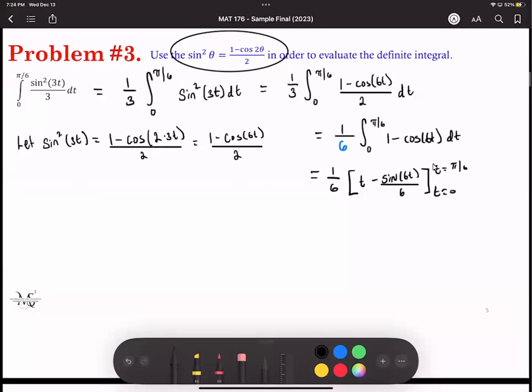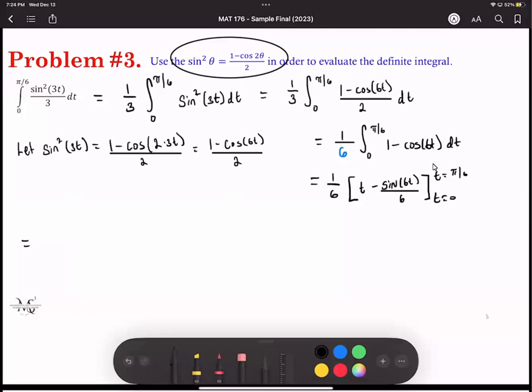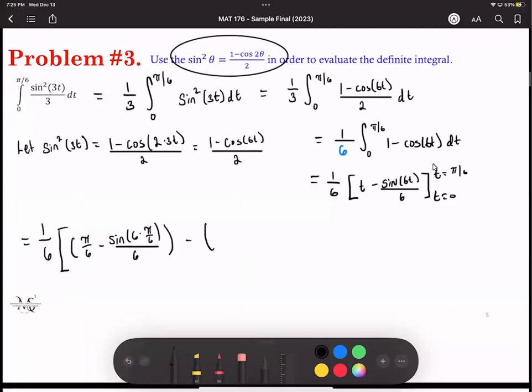All right, so for the evaluation now, I'm going to start back over here again. We're going to get one over six times, I'll put a smaller parenthesis here. Pi over six is replacing the T minus sine of six times pi over six divided by six, minus plug in the lower limit of integration, we get zero minus sine of six times zero over six.